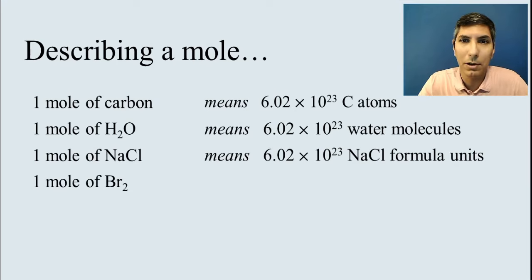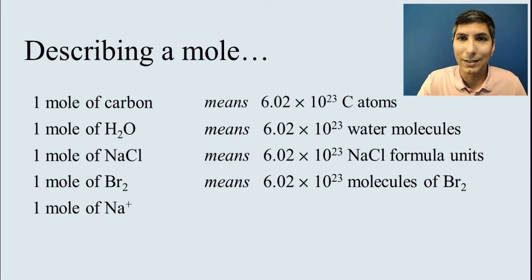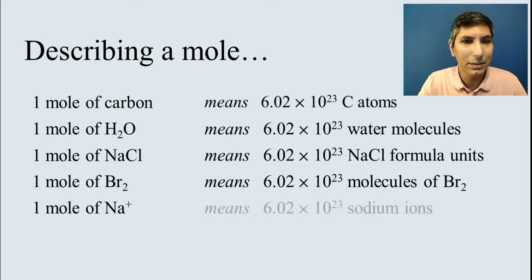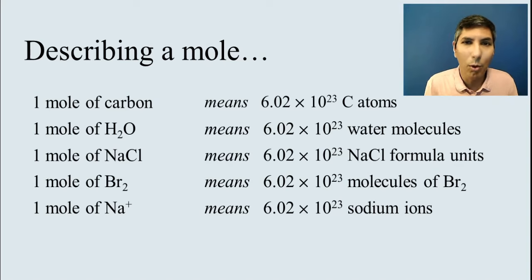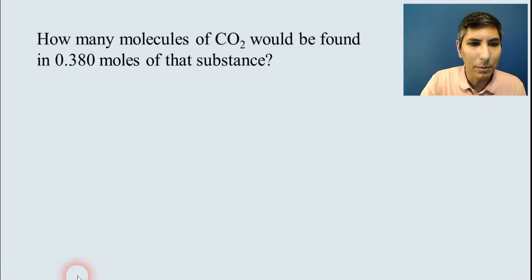One mole of bromine, Br2, that would be that many molecules of bromine. If we have ions, we can talk about a mole of ions as well. That just means 6.02 times 10 to the 23rd sodium ions. We can use a mole to talk about pretty much anything. A mole of anything really just refers to 6.02 times 10 to the 23rd fundamental units of whatever that substance happens to be, whether it's an atom or a molecule or an ion or a formula unit. A mole is just 602 sextillion of those objects.